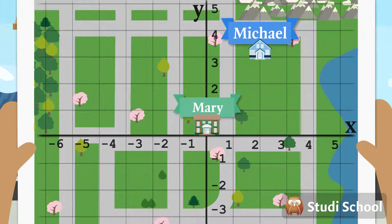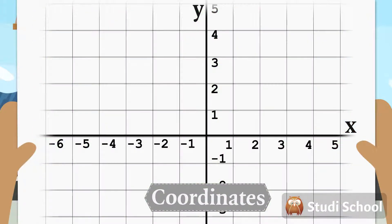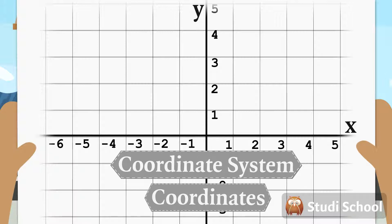Michael's house is located where X is 2 and Y is 3. The location of a point is referred to as the coordinates of that point. And this way of addressing points is called a coordinate system.